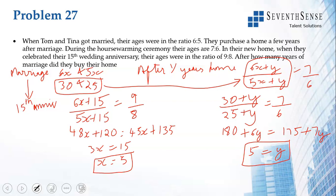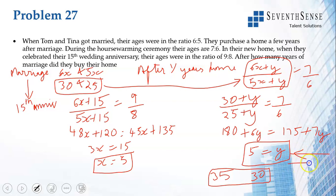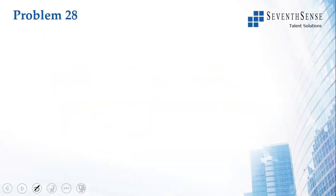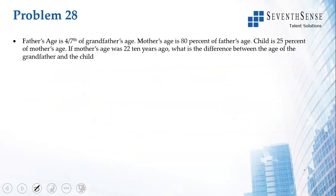So 5 years after marriage they purchased a home. At that time Tom was 30 + 5 = 35 and Tina was 25 + 5 = 30. The answer to how many years after marriage they bought their home is 5 years.